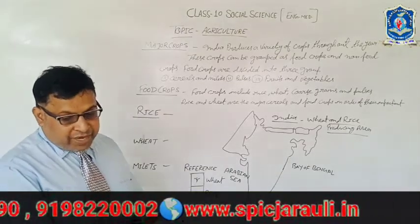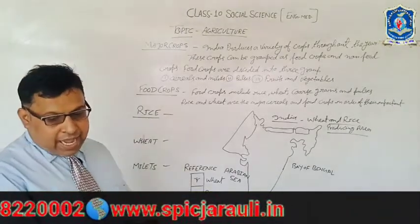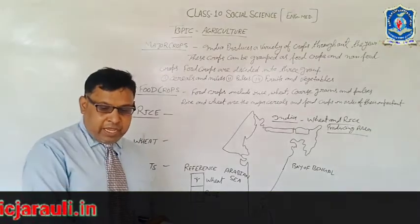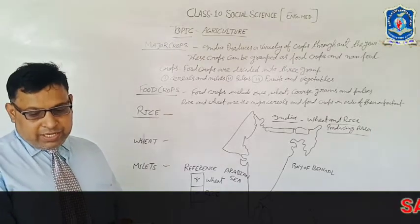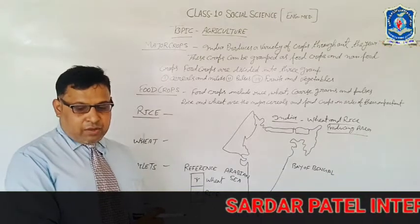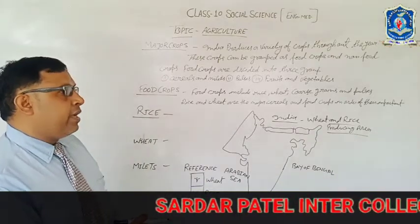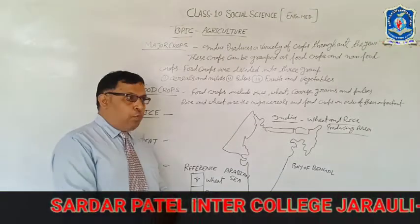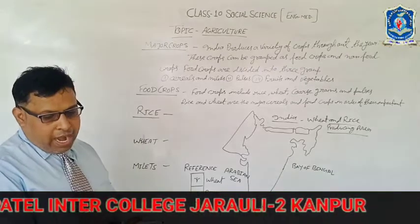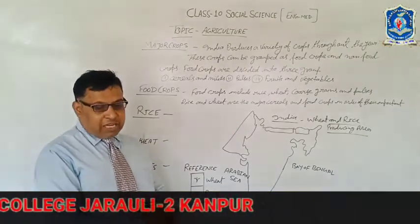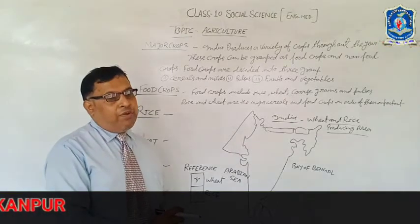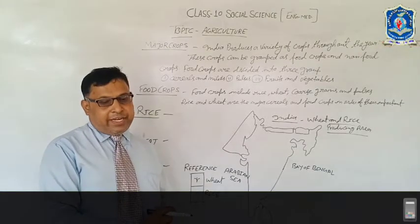प्रमुख गेहूँ उगाने वाले क्षेत्र हैं — गंगा-सतलुज मैदान, जिसमें पंजाब, हरियाणा, उत्तर प्रदेश, मध्य प्रदेश, उत्तरी राजस्थान, और डेक्कन का काली मिट्टी क्षेत्र शामिल हैं। गेहूँ के लिए ठंडी और नम जलवायु की आवश्यकता होती है और तापमान 15°C से 20°C उपयुक्त होता है।